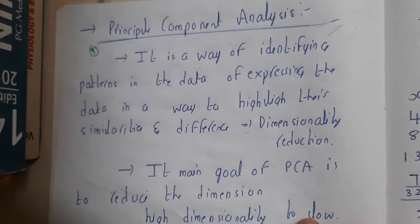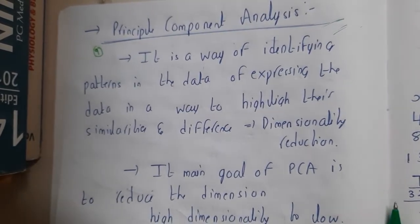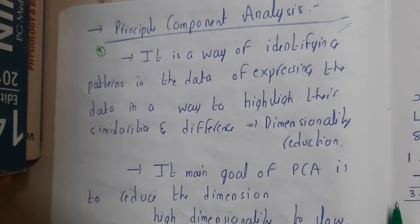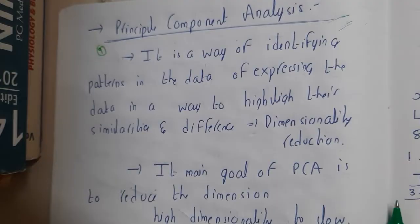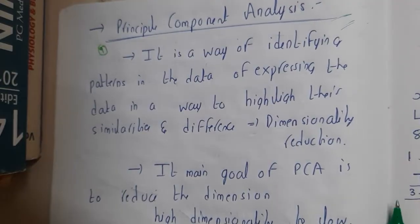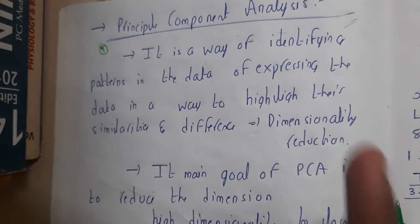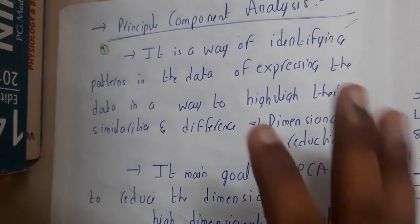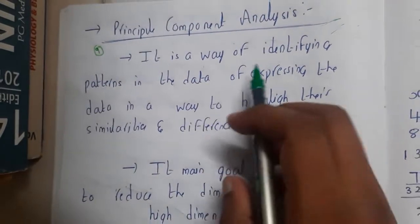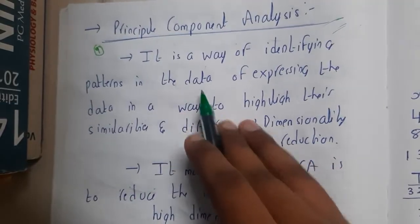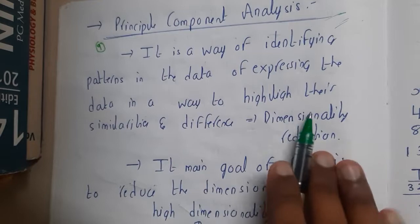Hello guys, we are back with our next lecture. In this lecture let us go through the concept of Principal Component Analysis. This is also a dimension reduction method — an algorithm or analysis method using which you end up reducing dimensions. It is a way of identifying patterns in the data and expressing the data in a way to highlight their similarities and differences.